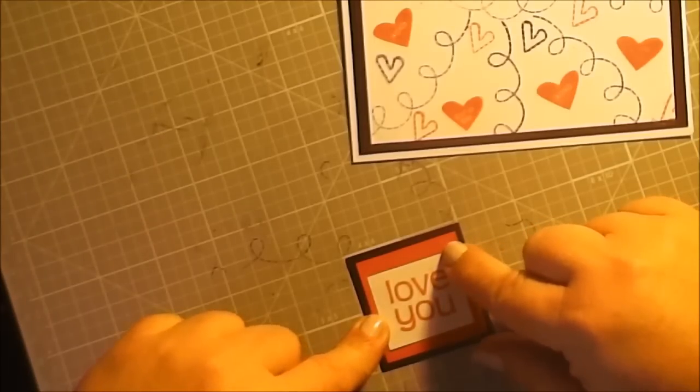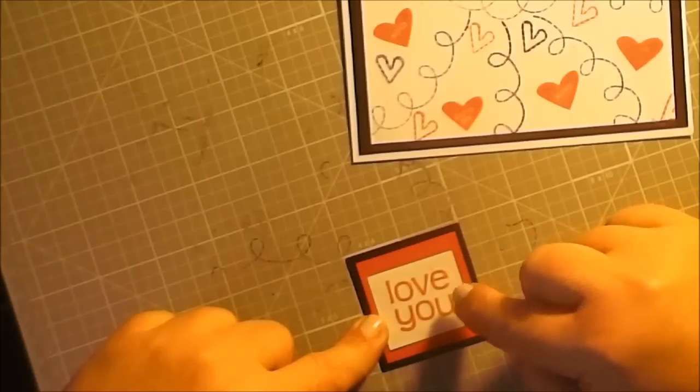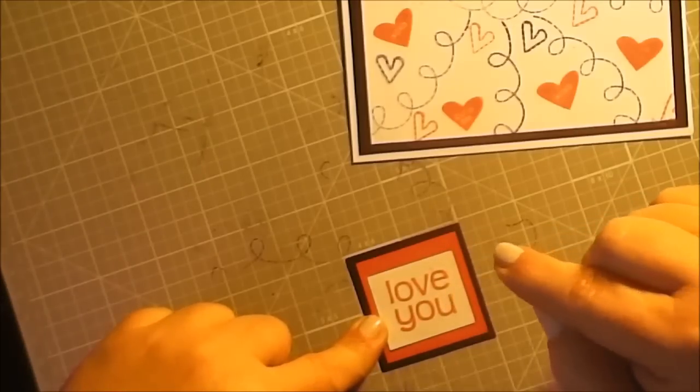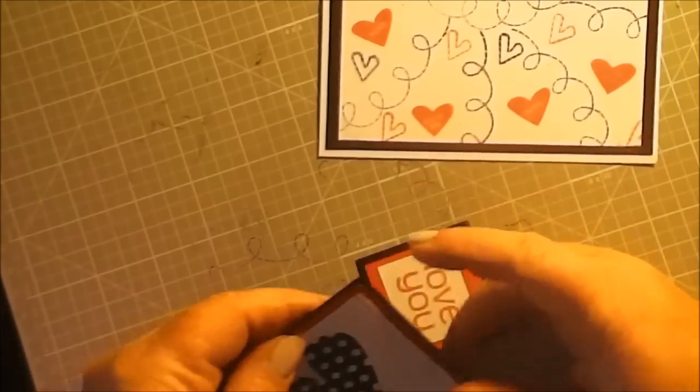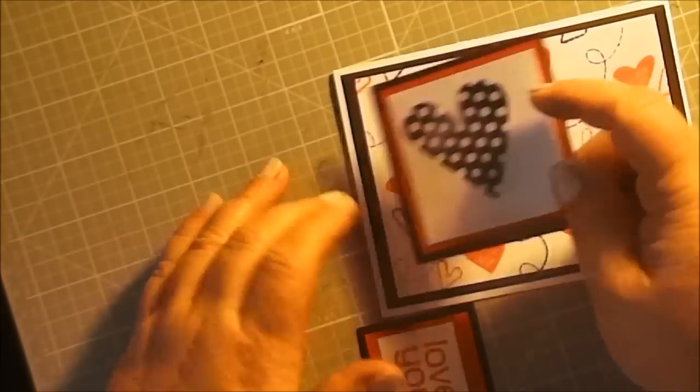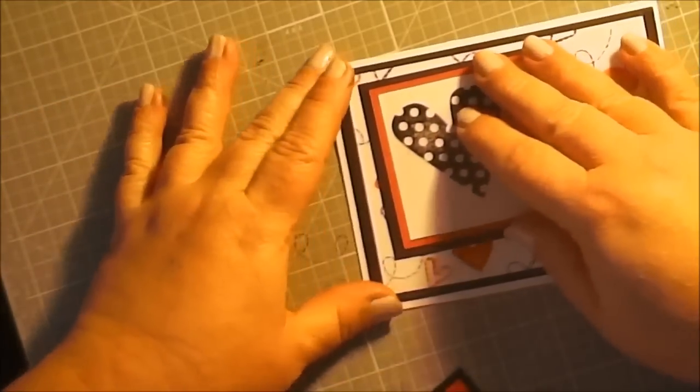All right, so two inches by two inches the black, the next one is one and three quarters by one and three quarters, and the white is one and a half by one and a half. Okay, so there we go.